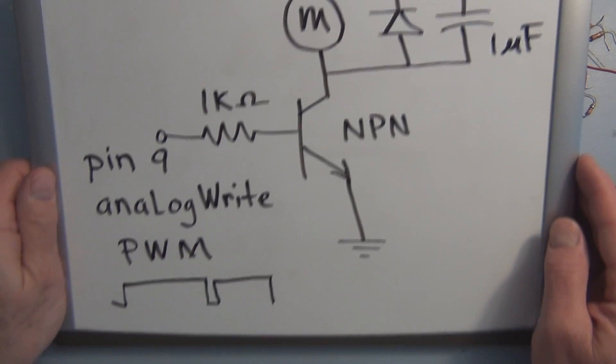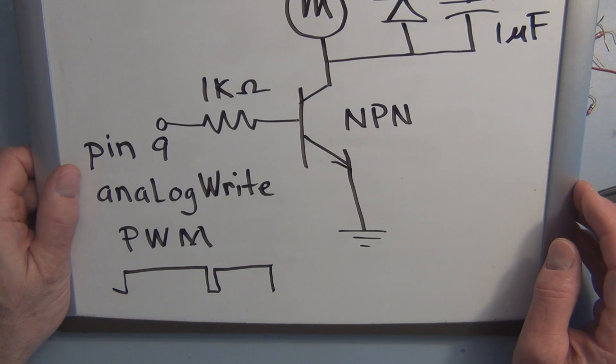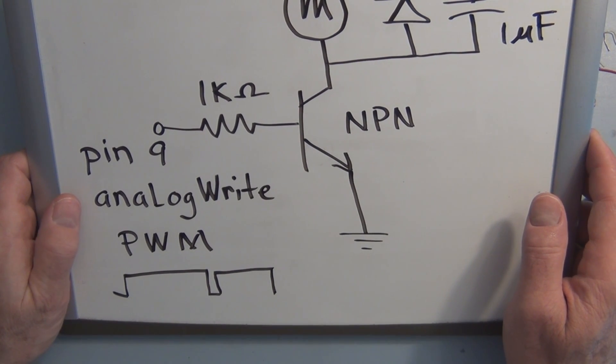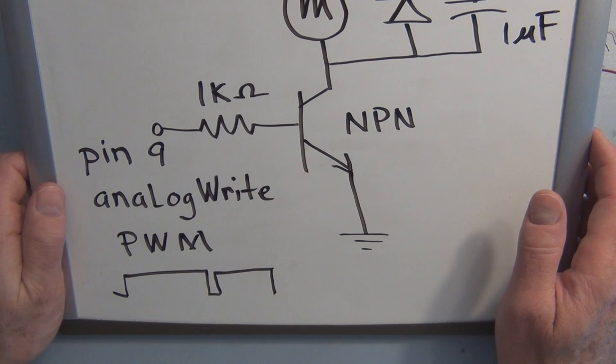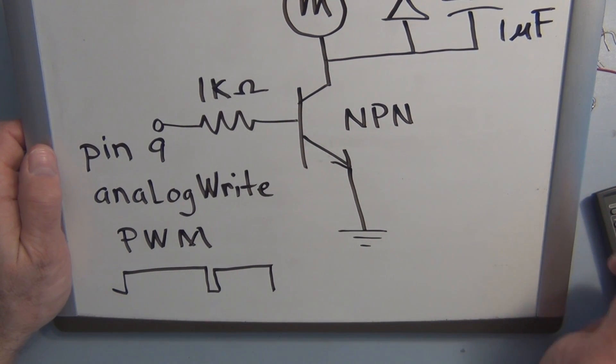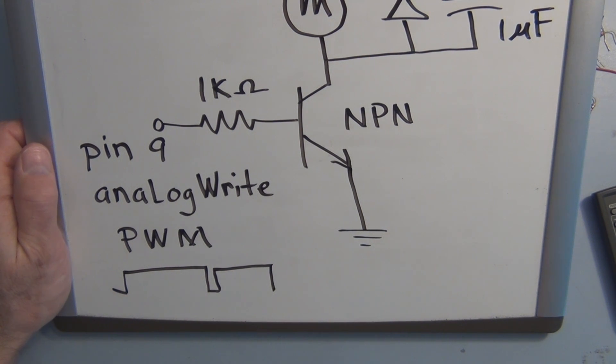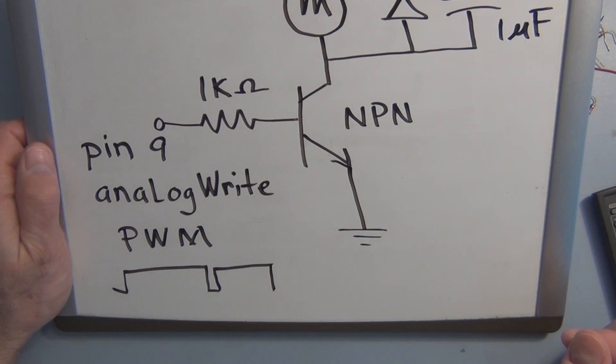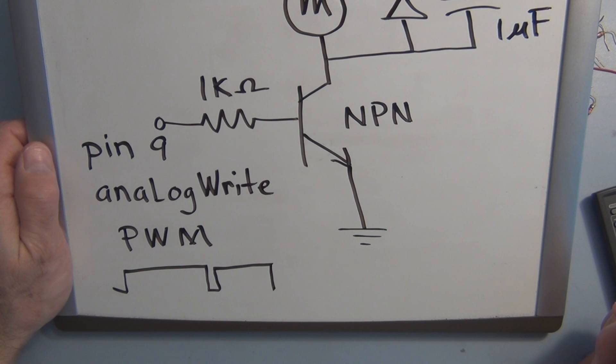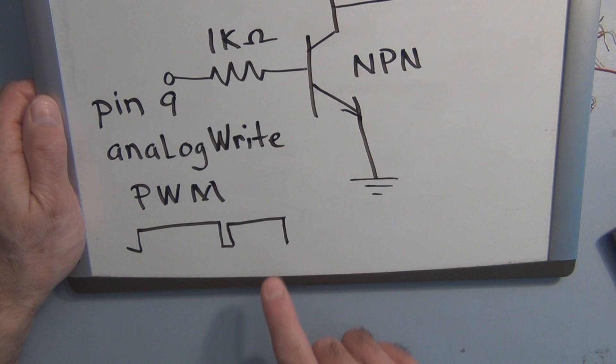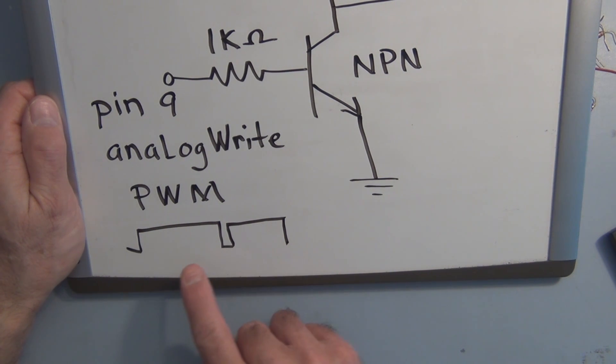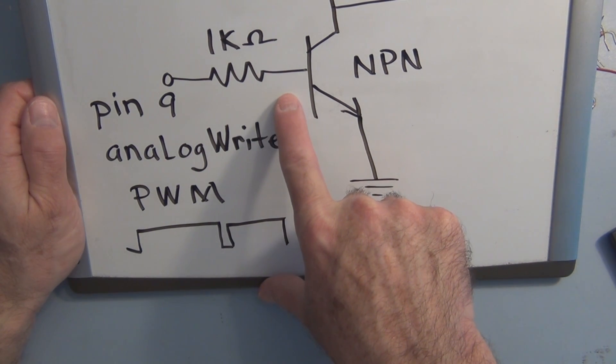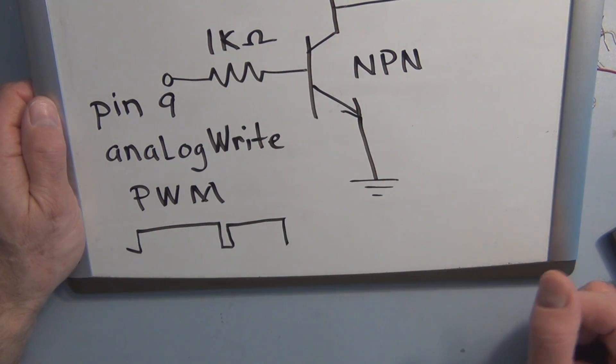So the base of the NPN transistor is connected to pin 9, and we're going to use an analog write. If you notice on the Arduino, some of the digital pins have like a little sine wave or a squiggly line. Those particular pins, they have the feature of using pulse width modulation on those pins. And that allows you to change the duty cycle or the on and off times, which allows you to increase the drive on this transistor and increase the speed of the motor.